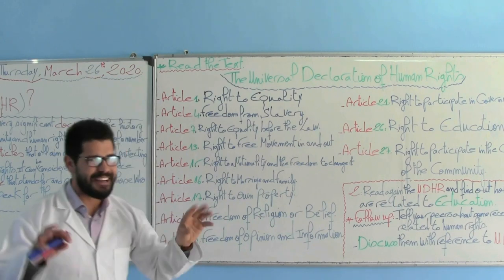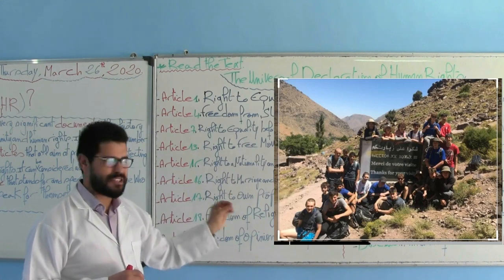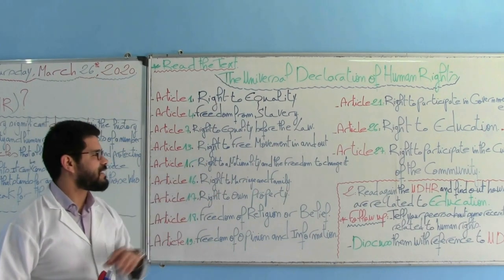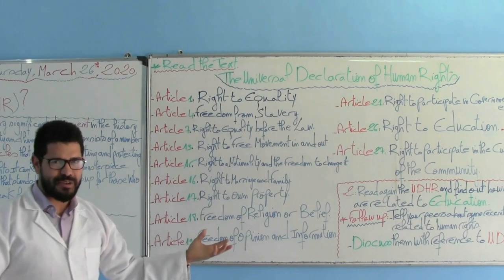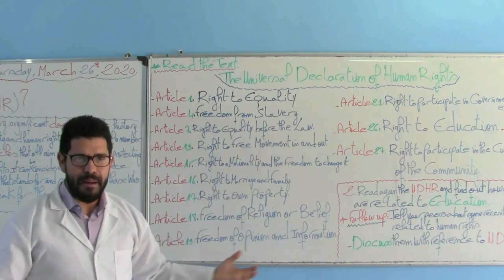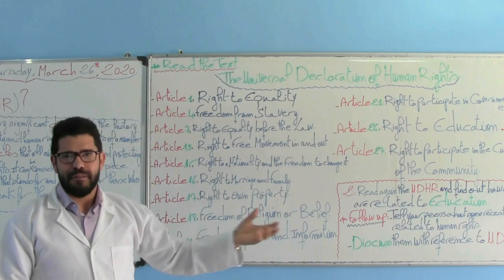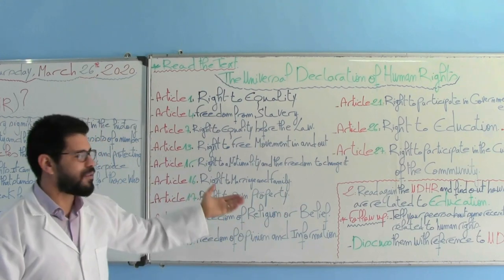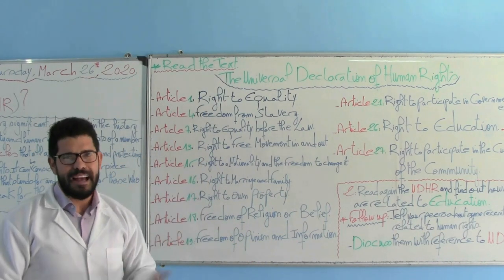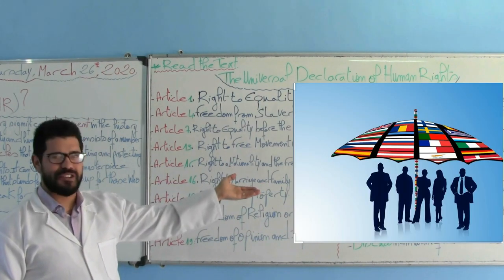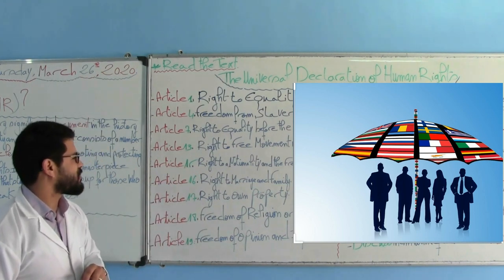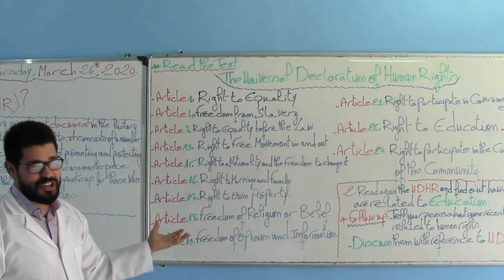Article number 15: Right to our nationality and the freedom to change it. I am a Moroccan citizen and I'm proud of my nationality. But there is no harm if I change my nationality or ask for double nationality. We all have the right to change our nationality. This is a legitimate right that all citizens of the world have access to. This picture best explains Article number 15.